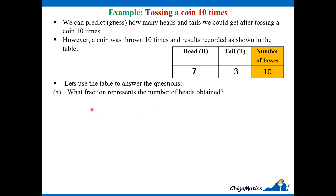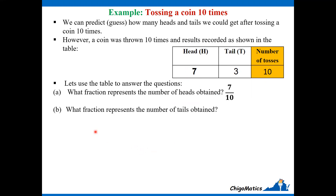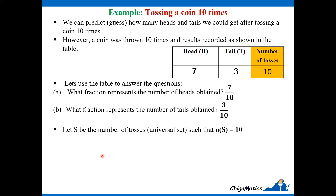Using the table to answer the questions: what fraction represents the number of heads? Looking at the column of heads, there are 7 out of 10 tosses, therefore 7 over 10. What fraction represents the number of tails obtained? Looking at the column of tails, we have 3 out of 10, so the fraction is 3 over 10.